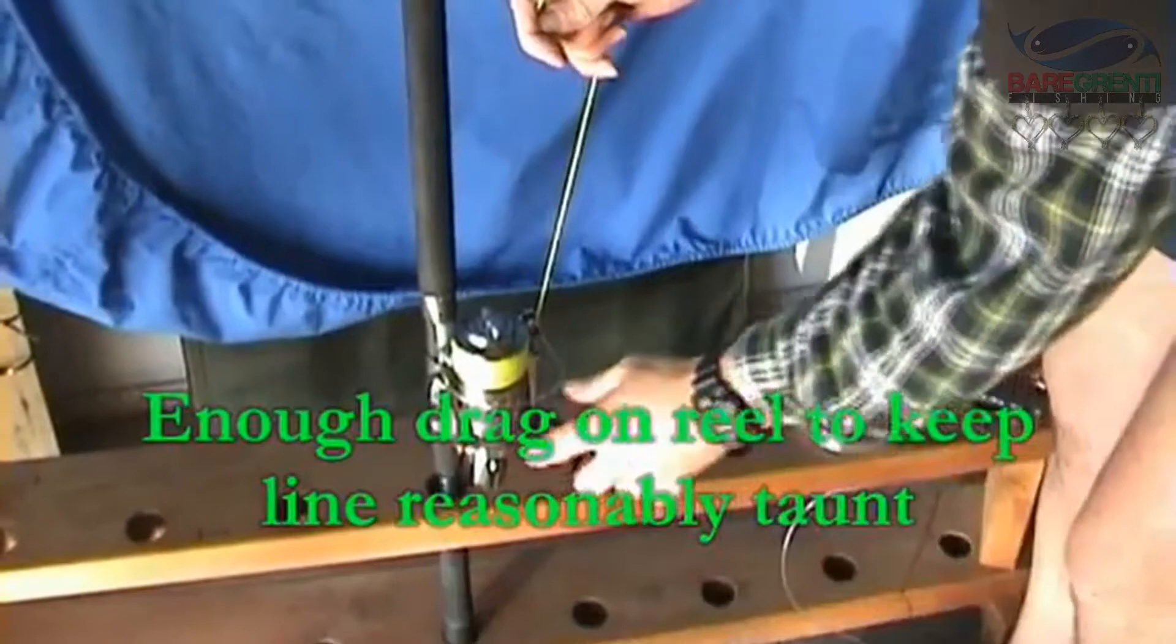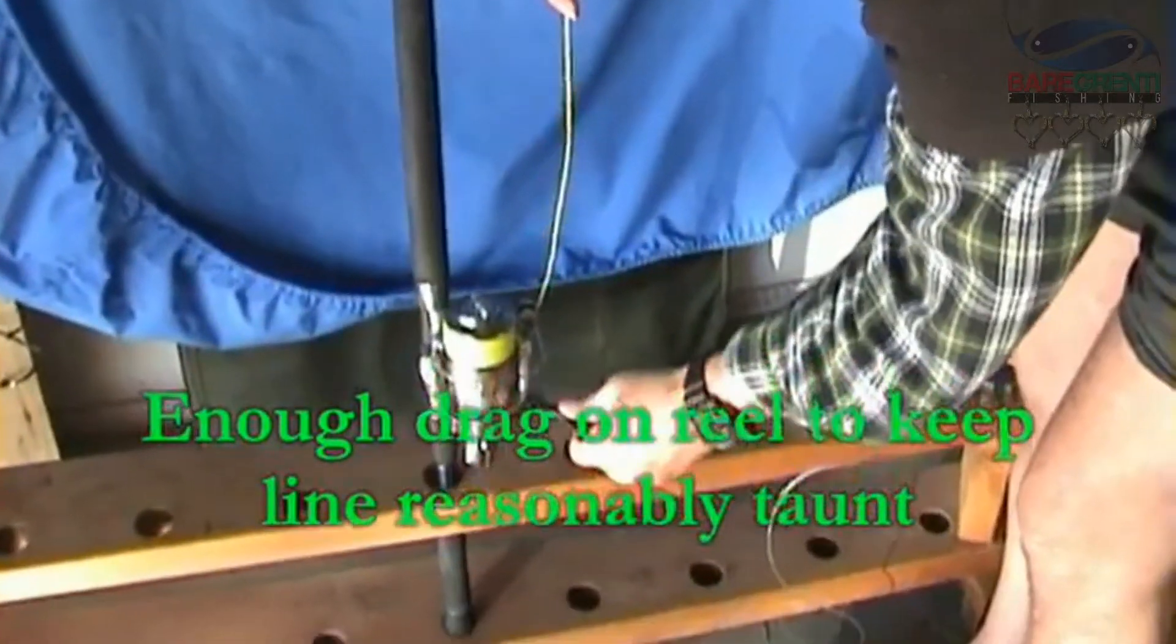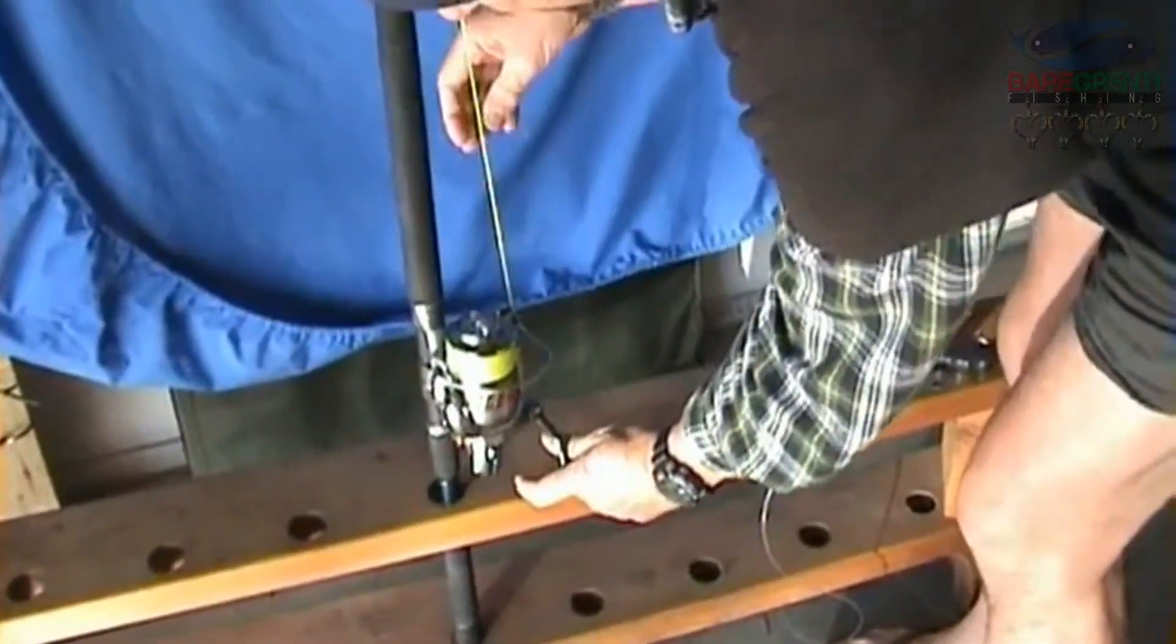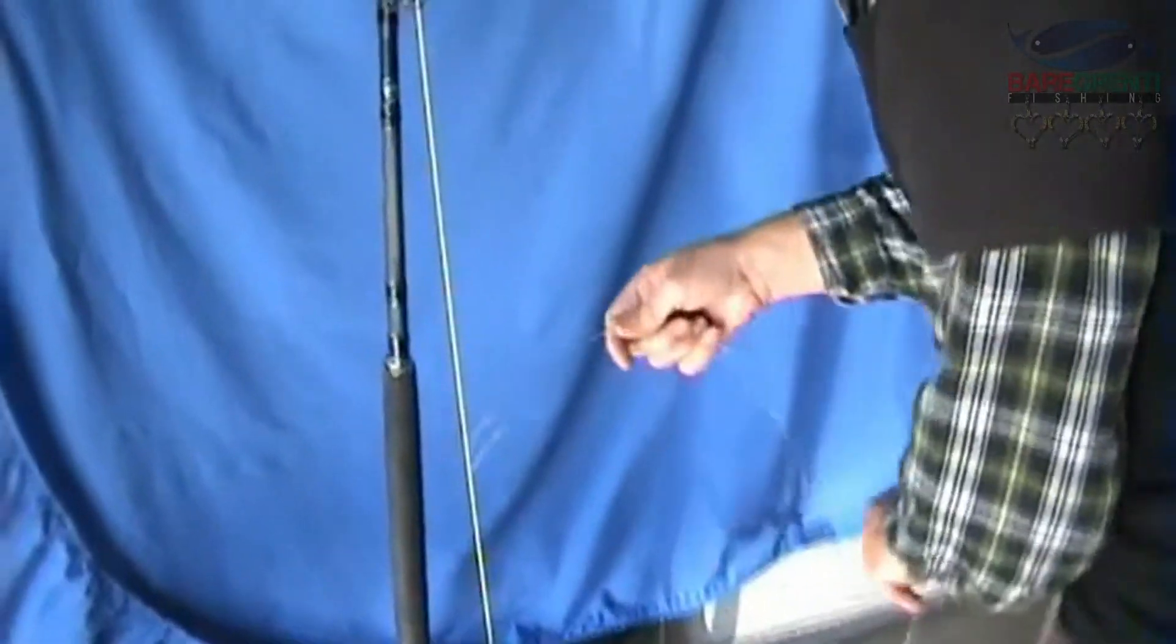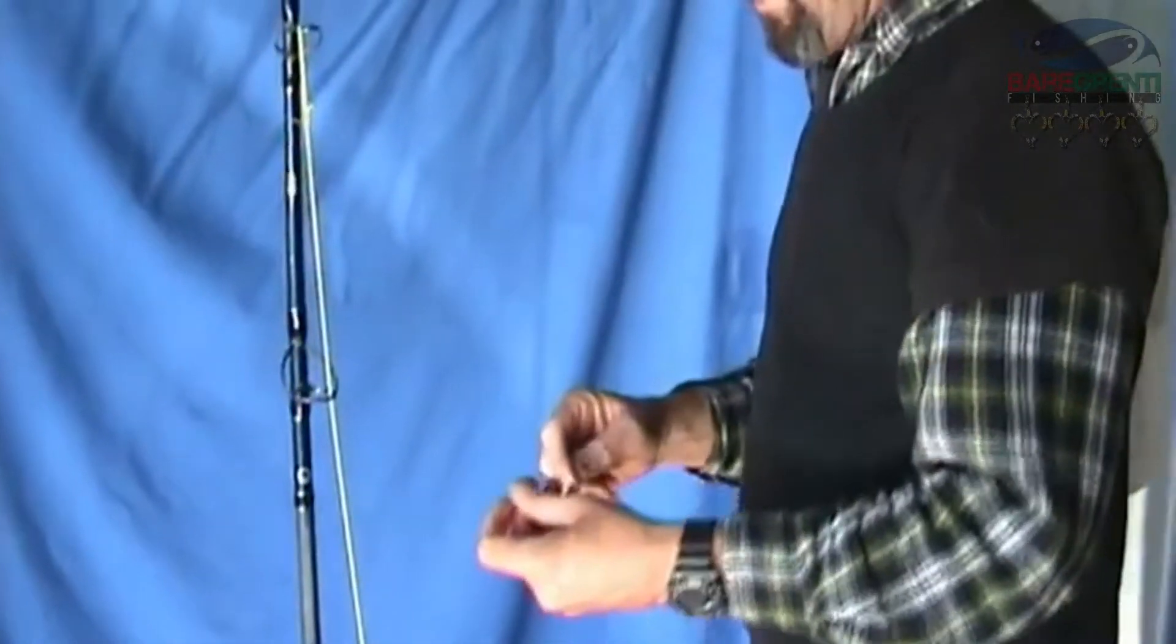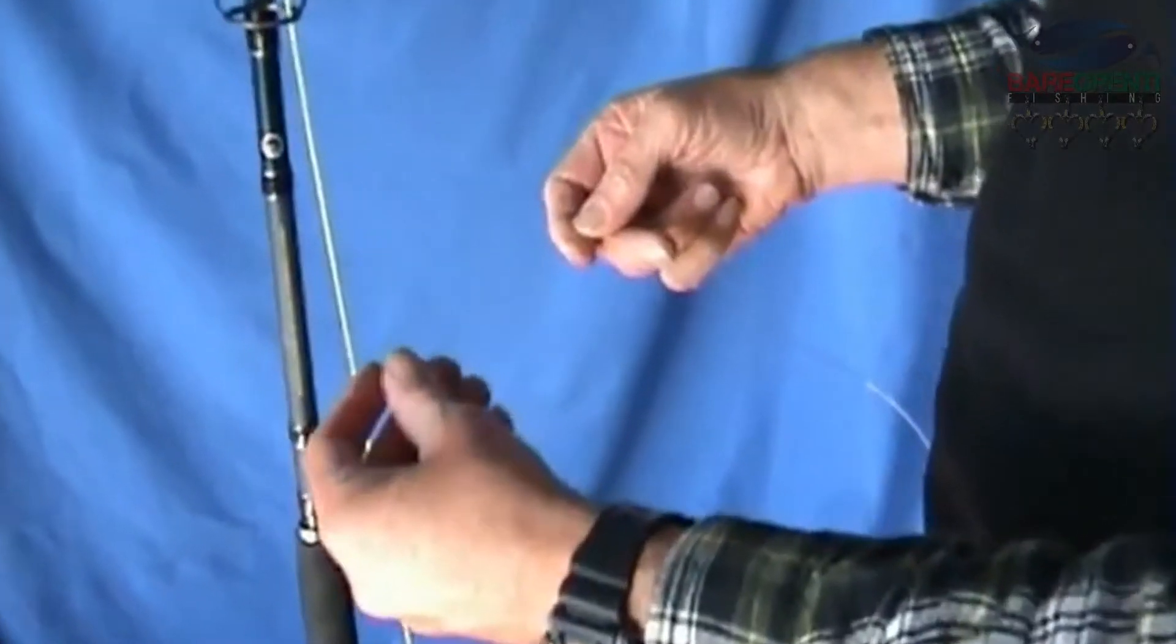There isn't too much drag on here. There's enough drag to keep this line tight. Now I've got some heavy mono here for the demonstration. This is 300lb mono.